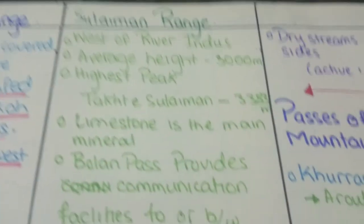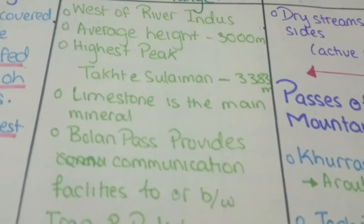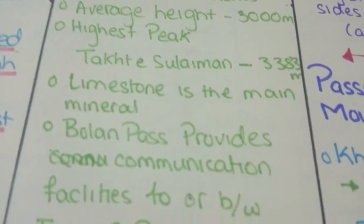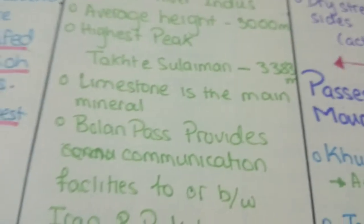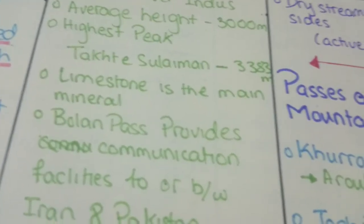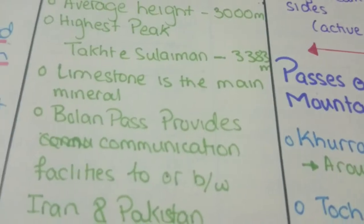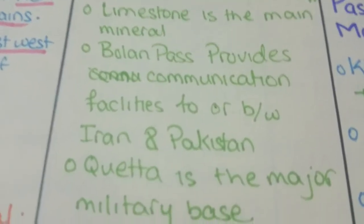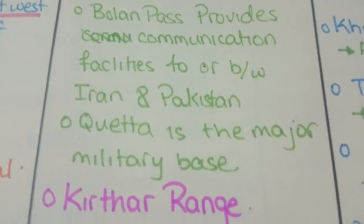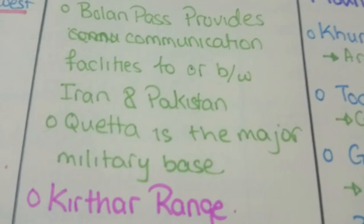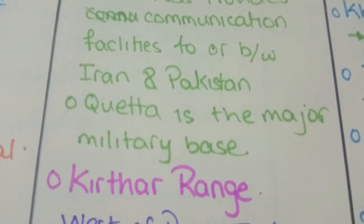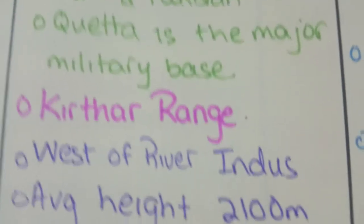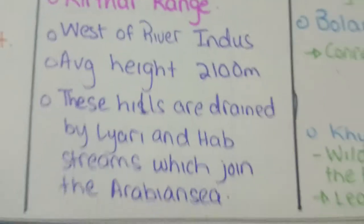Suleiman Range is located west of River Indus. Average height here is 3,000 meters. The highest peak is Takht-e-Suleiman at 3,383 meters. Limestone is the main mineral. Bolan Pass provides communication facilities between Iran and Pakistan. Quetta is the major military base.